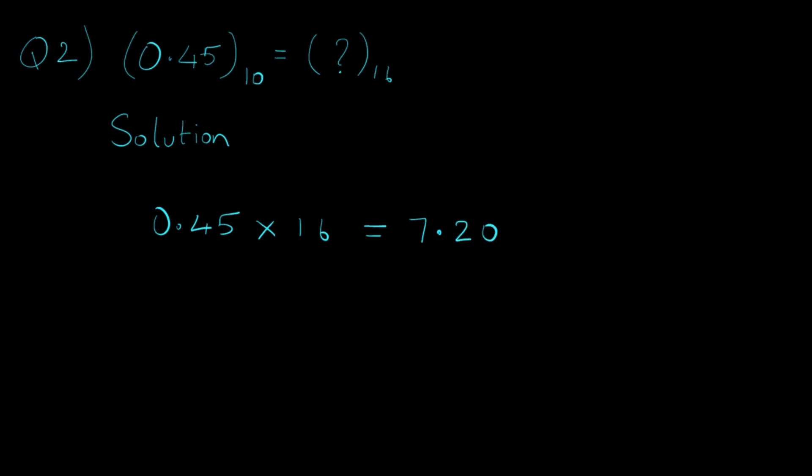Now here we are interested in the integer part, so we write it separately and ignore it for the next iteration. For the next iteration we have 0.20 which again needs to be multiplied with 16 to get some answer. We carry on this process till we end up with value 0 or we get a repetitive pattern of numbers.